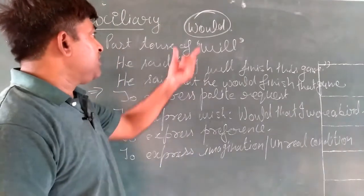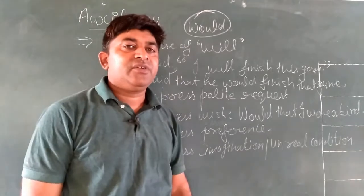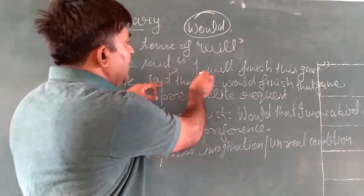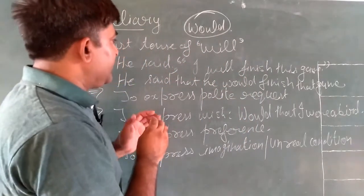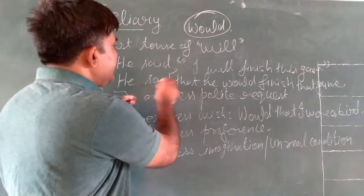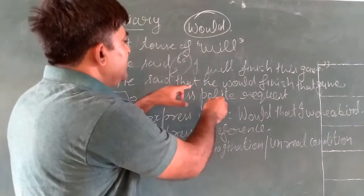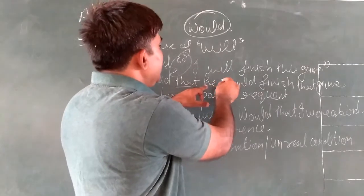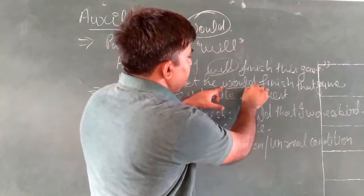Now let us discuss the uses of 'would.' Would is the past tense of will. For example, if someone says 'I will finish,' when we convert this sentence into reported speech, will changes into would. He said that he would finish.